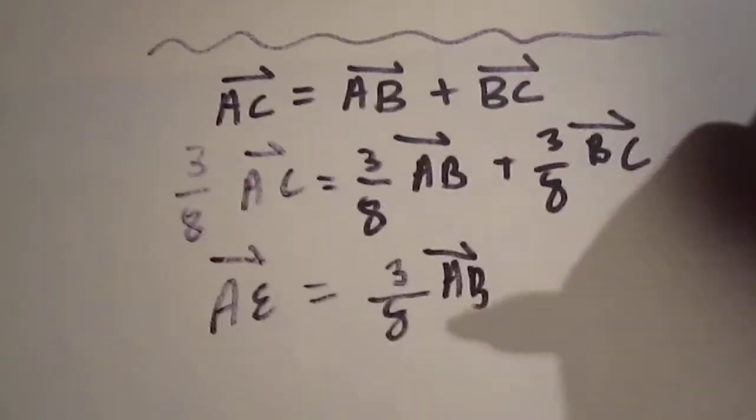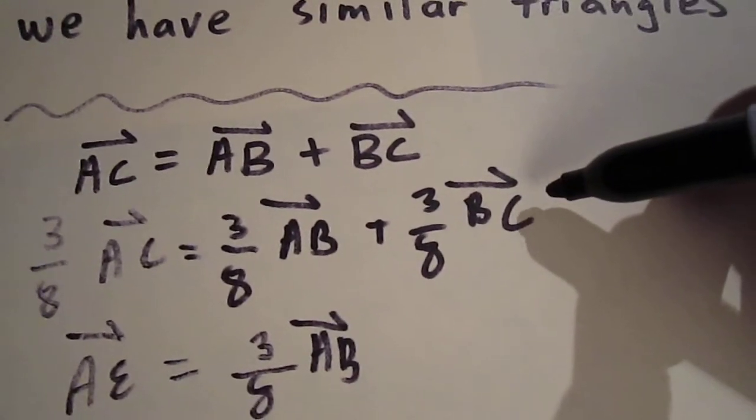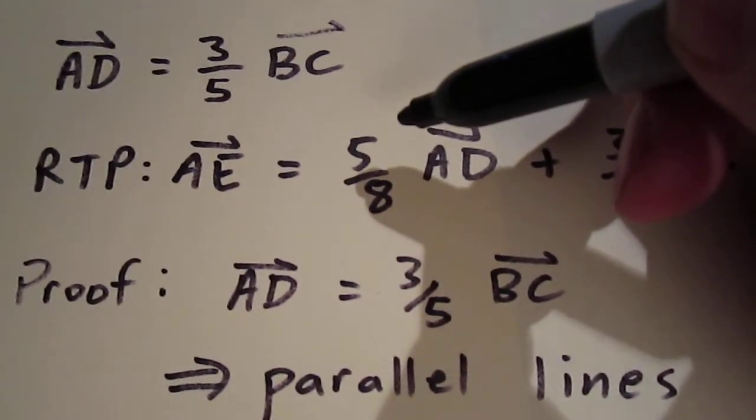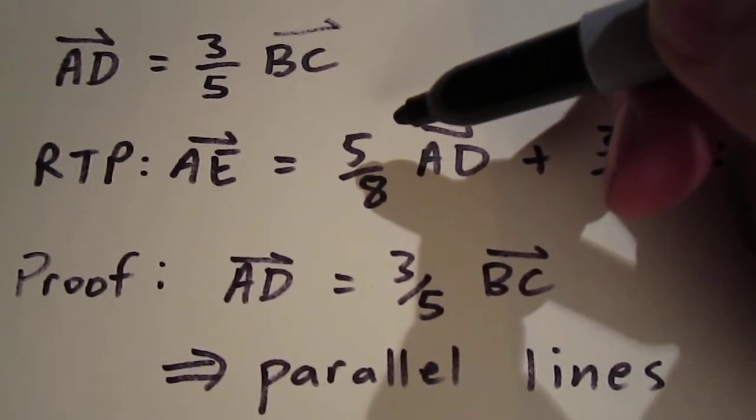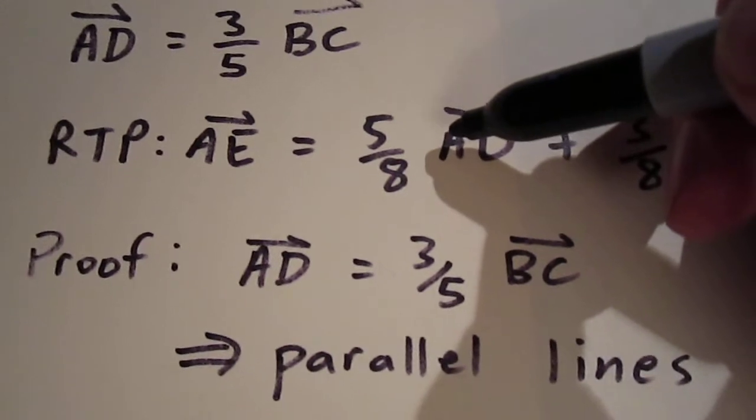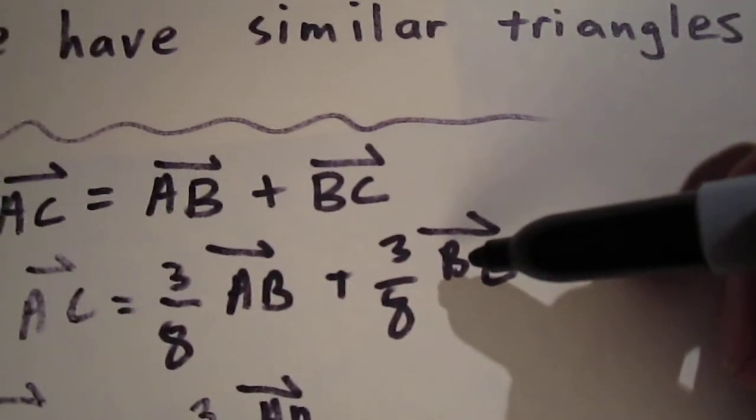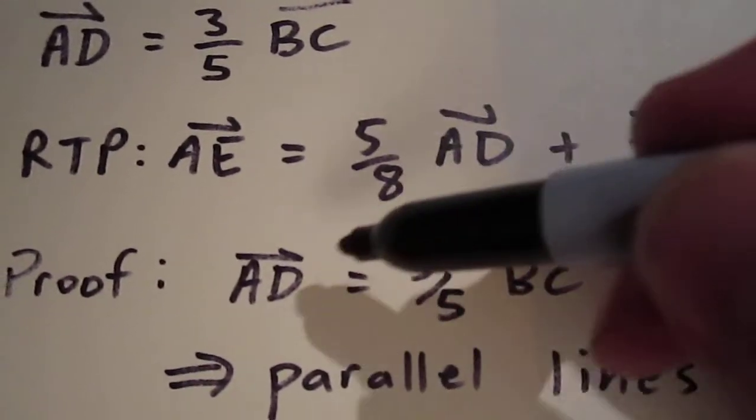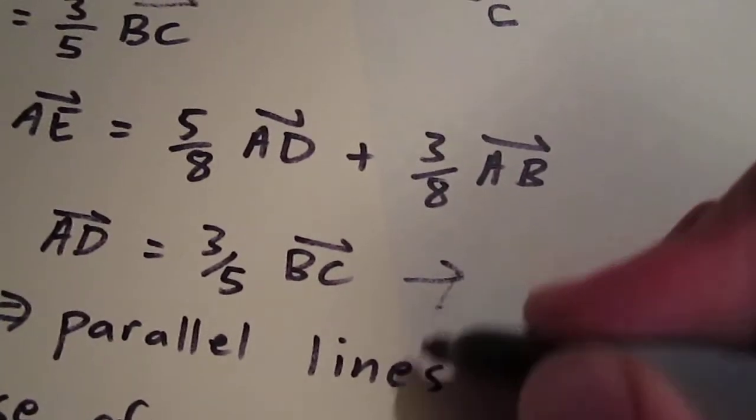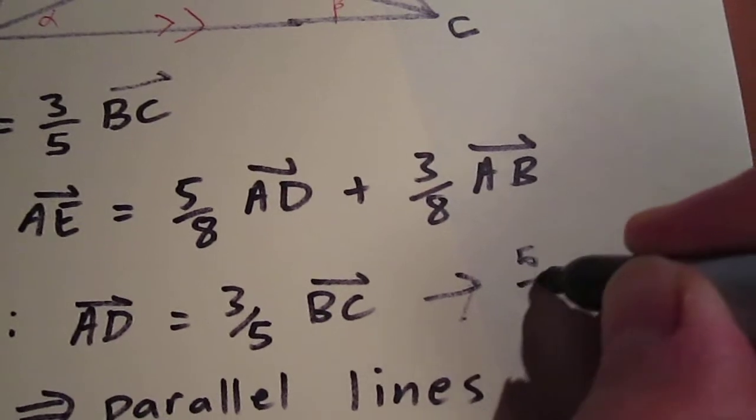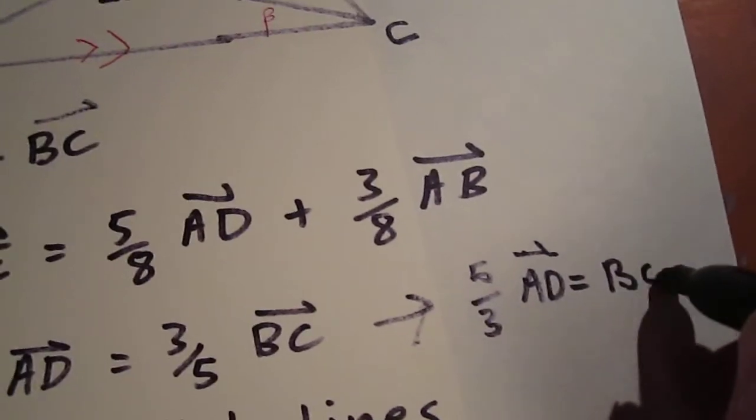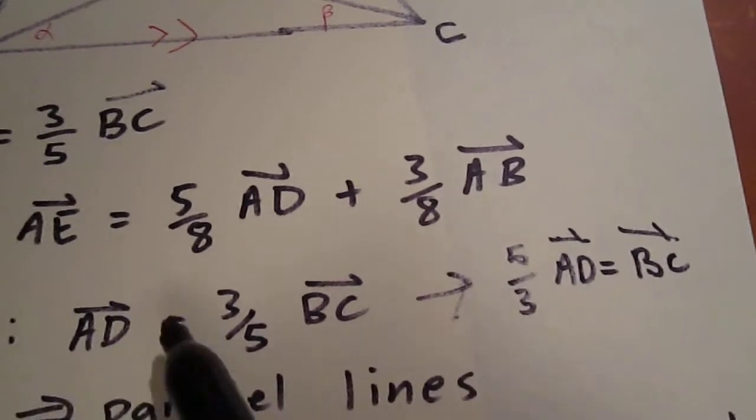And now, all I need to do is show that 3 eighths of BC is the same as 5 eighths of AD. In order to do that, we're going to rearrange the one statement we have in terms of BC and AD. What we're trying to do is convert 3 eighths of BC to 5 eighths of AD. So, what we want to do is get a statement for BC in terms of AD. We have that, only we have it in reverse. We have AD in terms of BC. So, we're simply going to rearrange this. And now, it's going to say that 5 thirds of AD equals BC. Just multiply each side here by 5 thirds.